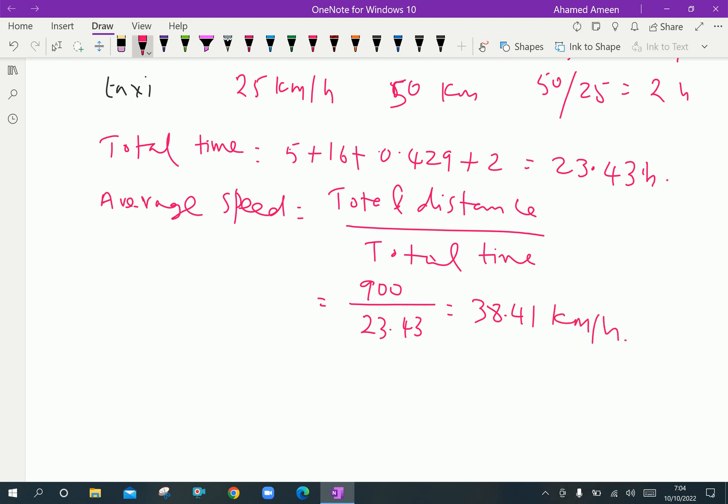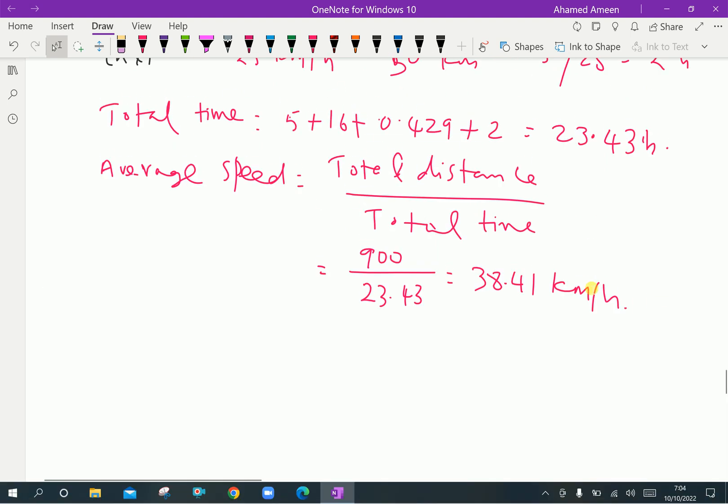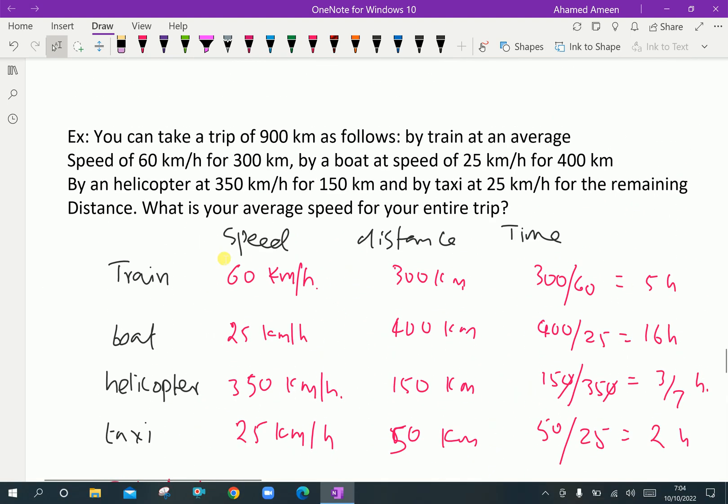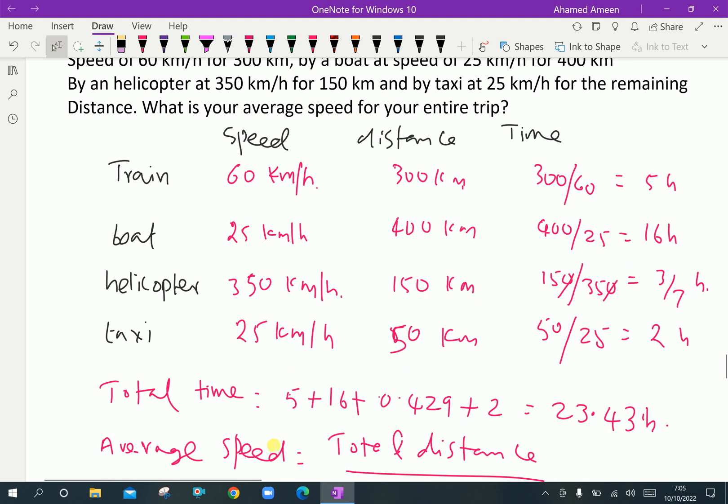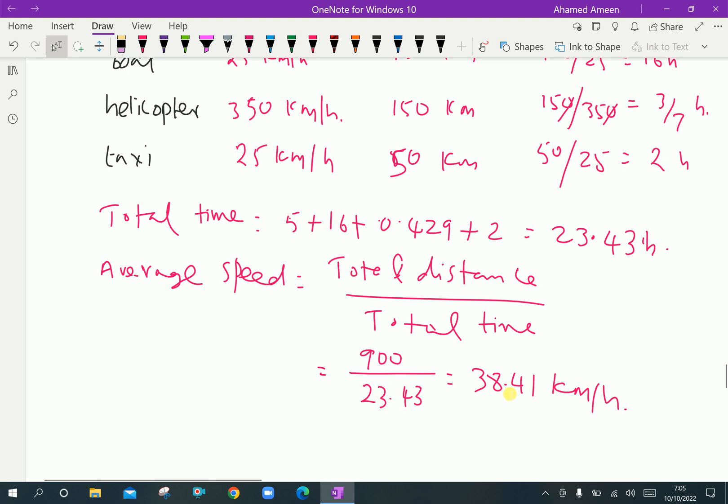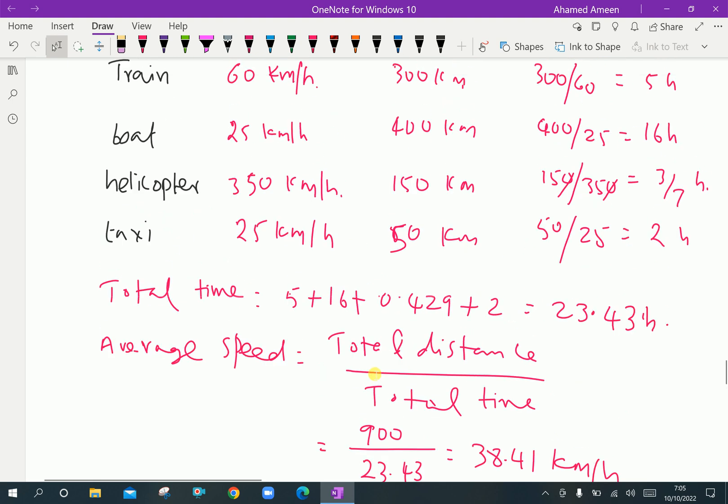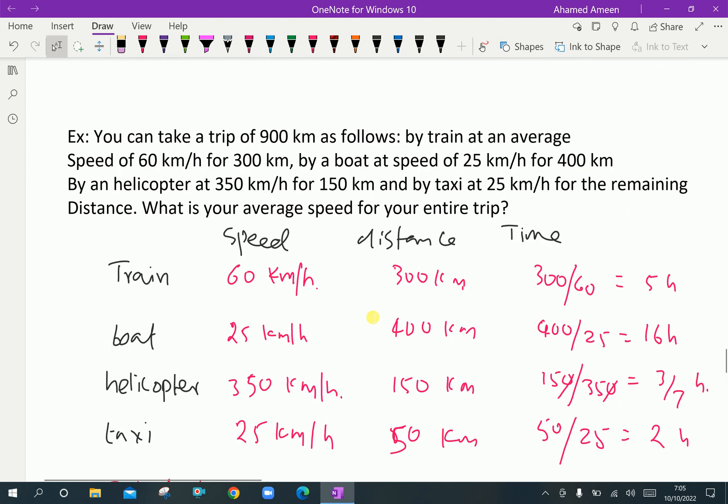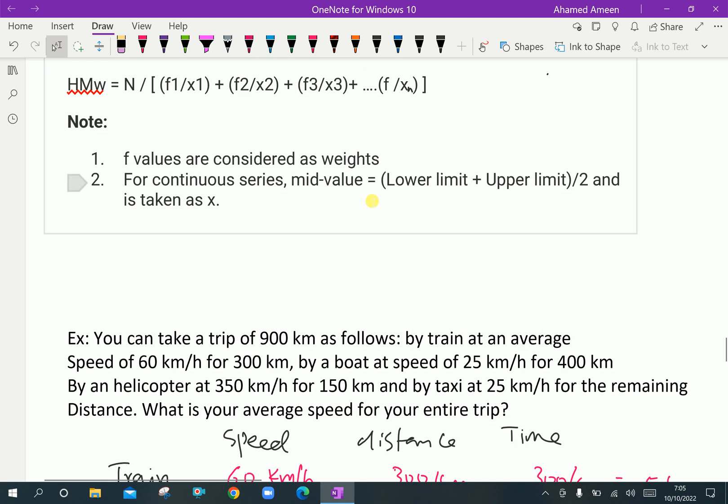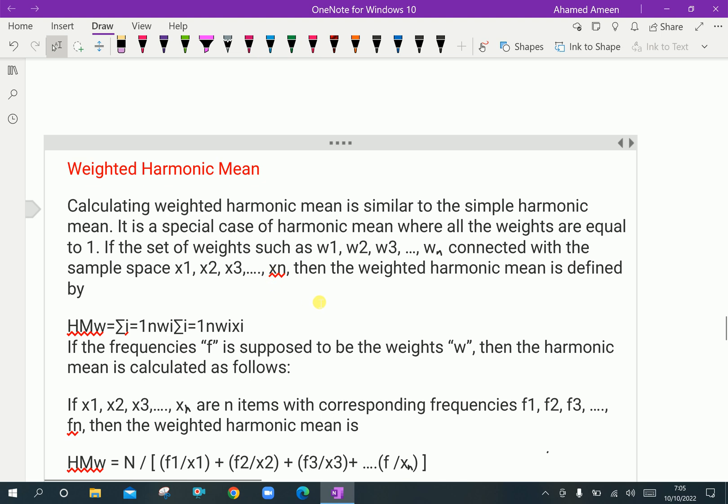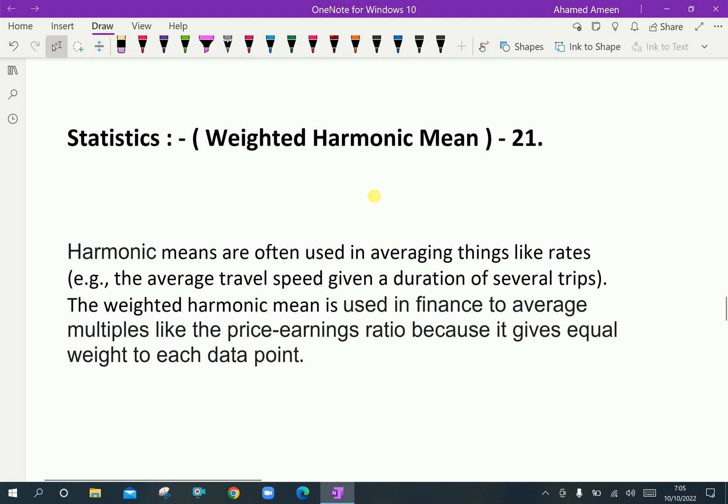Here so far we used, here we are splitting speed, distance, time for different categories that is train, boat, helicopter and taxi. From that we calculated the time taken for each travel and add of that times which gives total time. And average speed is total distance by total time, that is 900 kilometer over 23.43 equals 38.41 kilometer per hour. This is the weighted harmonic mean we got it. We discussed, we have done. Please subscribe our YouTube channel.